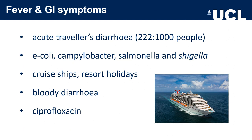Acute traveller's diarrhoea is very common, affecting about 222 people per 1,000. Common examples include E. coli, Campylobacter, Salmonella and Shigella. Pay attention to these pathogens in those who have been on cruise ships and resort holidays. Campylobacter, for example, causes bloody diarrhoea and the treatment is ciprofloxacin.